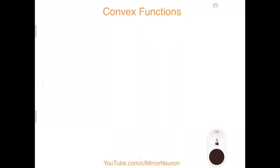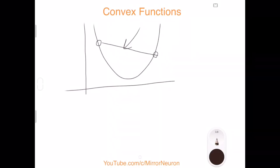For example, if I have a single variable and my function looks something like this, then if I take two points, any two points, and connect them, and if this line stays above this function - so this is my function between these two points.